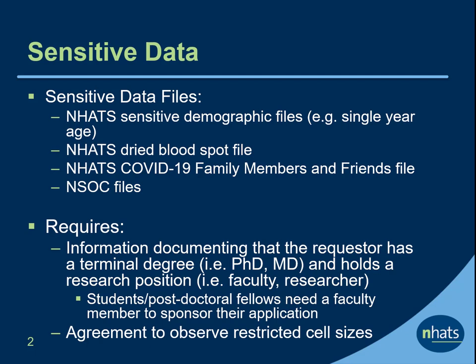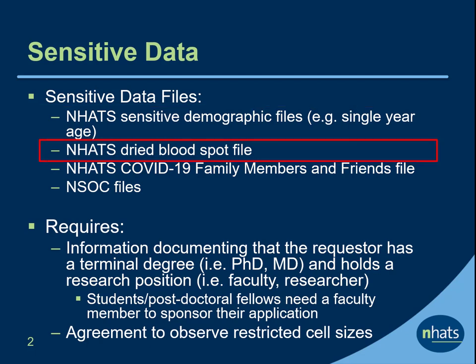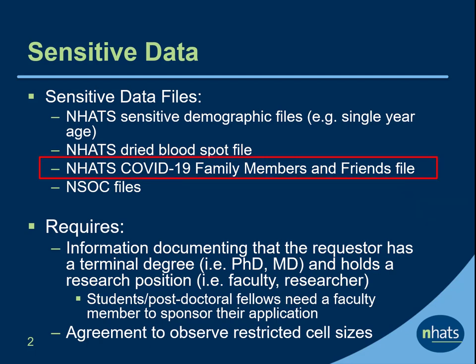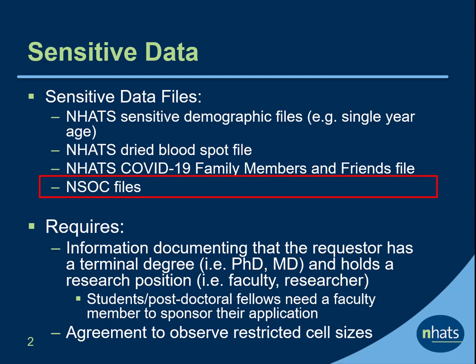NHATS has deemed some of its files to be sensitive, meaning that there is a slightly higher risk of identifying someone in the sample under certain conditions. Sensitive data files include NHATS Sensitive Demographic files, which include, for example, single year of age, and the NHATS Dried Blood Spot file. In addition, all interviews from family members or friends that link to NHATS, such as the NHATS COVID-19 Family Members and Friends file and the National Study of Caregiving files, are considered sensitive.